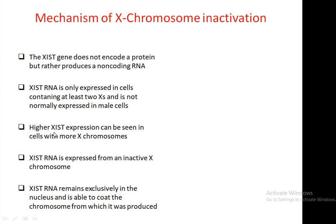Higher gene expression of XIST can be seen in cells with more X chromosomes, especially in cases like Triple X syndrome where more X chromosomes are present — the XIST expression is also significantly increased. The XIST RNA is expressed from the inactive X chromosome. This XIST RNA remains exclusively in the nucleus and is able to coat the chromosome from which it was produced.